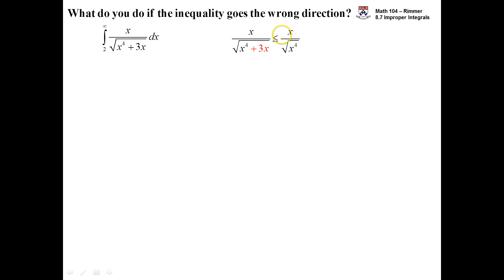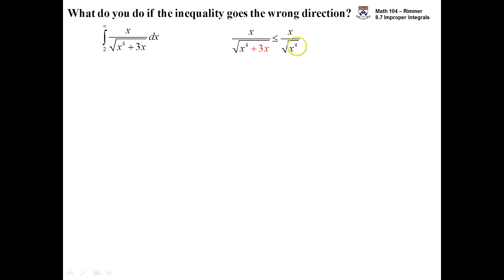Why would dropping off the 3x term cause the inequality to go that direction? It's because the left-hand side has more in the denominator. If you have more in the denominator, then you must be smaller. Simplifying the right-hand side, the root of x to the fourth is just x squared, and x over x squared is just 1 over x.